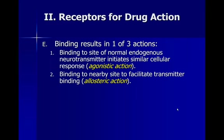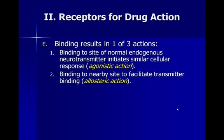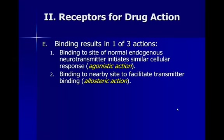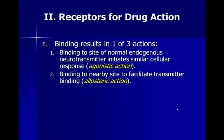Similarly, you can have a neurotransmitter bind to a nearby site which will facilitate transmitter binding — it's called allosteric action. Essentially what it's doing is helping out the neurotransmitter and making it more effective, boosting the efficacy of that particular neurotransmitter by facilitating its binding. Without the neurotransmitter itself, it has no effect — it's simply facilitating that neurotransmitter.